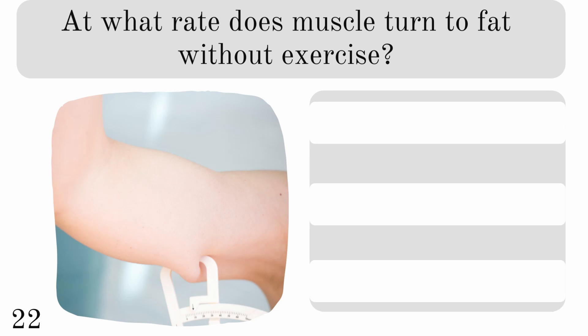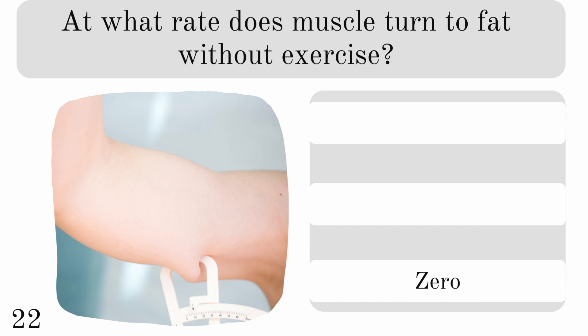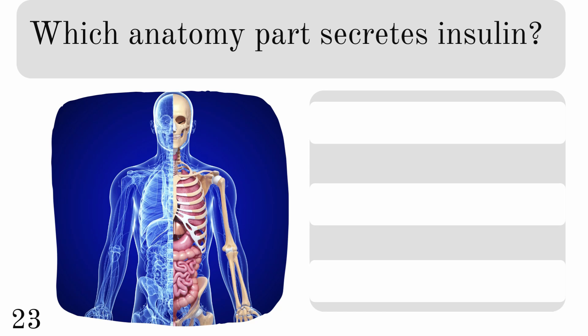At what rate does muscle turn to fat without exercise? One pound a week, one pound a month, or zero? And the answer is zero. And drop a comment down below if you know why. Which anatomy part secretes insulin? The pancreas, kidneys, or liver? And it is the pancreas.